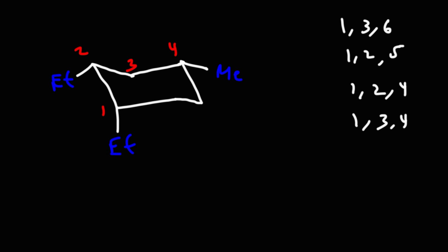Ethyl comes before methyl, so we're going to write that first. So this is going to be 1,2-diethyl and then 4-methylcyclohexane. So now you know how to name cycloalkanes when presented using chair conformations.